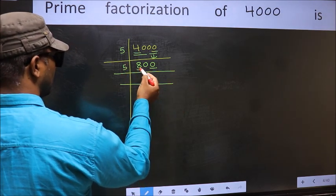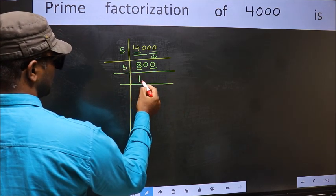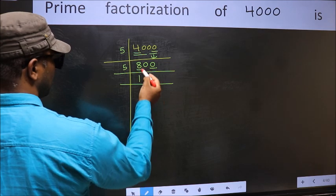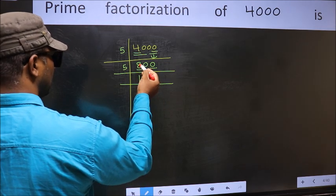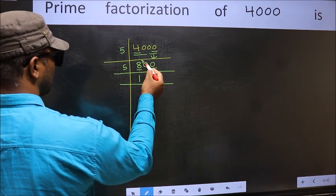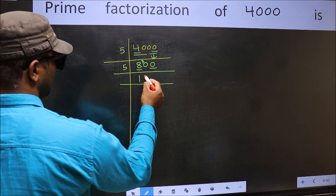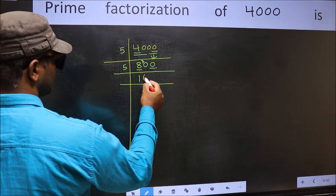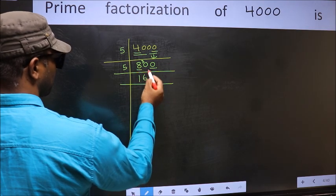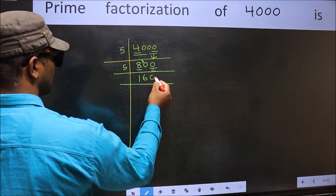Now last digit is 0, so take 5. First number is 8. A number close to 8 in the 5 table is 5 × 1 is 5. 8 - 5 = 3, carried forward: 30. When do we get 30 in the 5 table? 5 × 6 = 30. This 0 goes down as is.